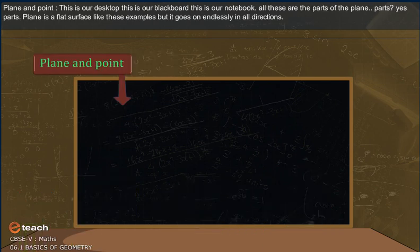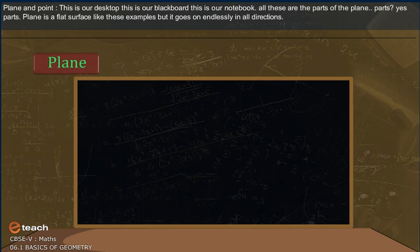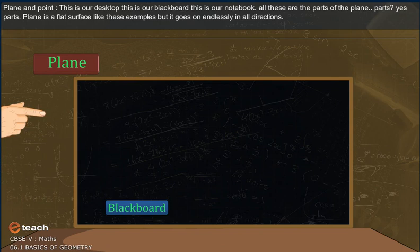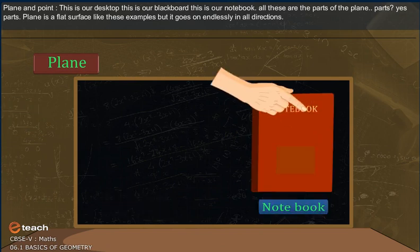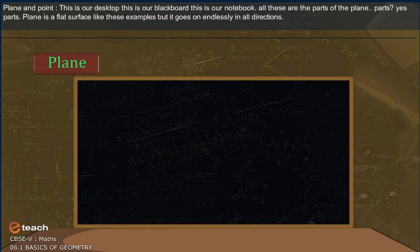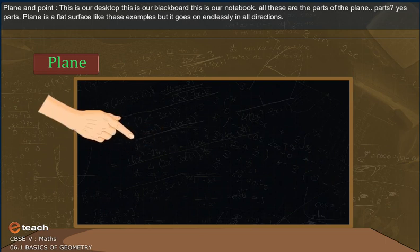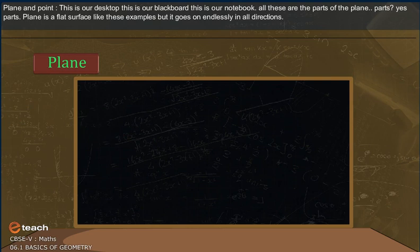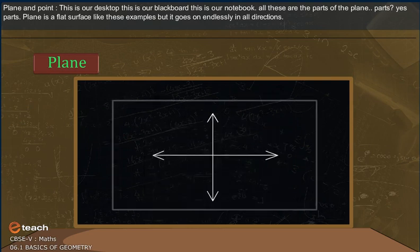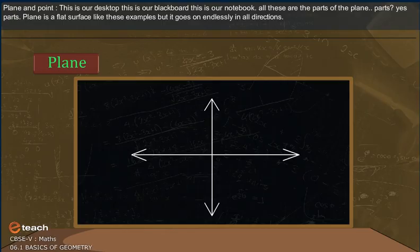Plane and Point. Plane: This is our desktop. This is our blackboard. This is our notebook. All these are the parts of the plane. Parts? Yes, parts. Plane is a flat surface like these examples but it goes on endlessly in all directions.